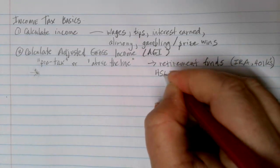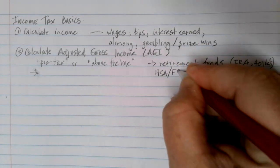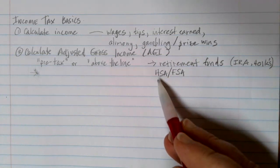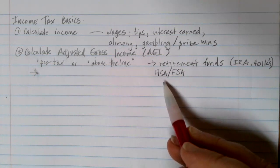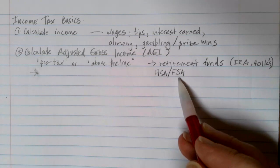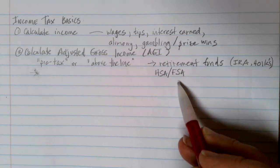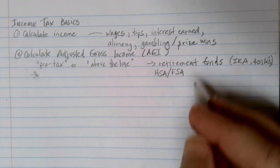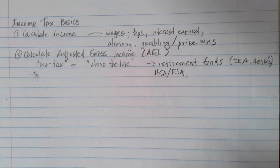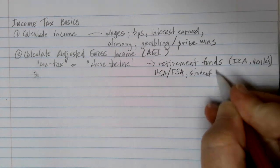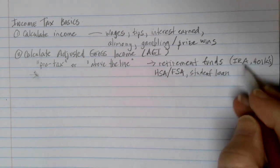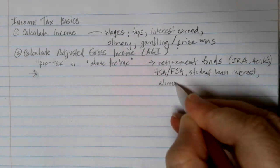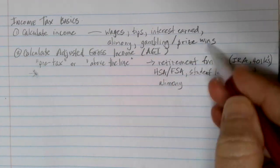Other things that count as pre-tax: you'll sometimes see HSA or FSA deductions. HSA stands for health savings account, where you're basically setting some money aside pre-tax to apply towards future medical expenses. A flex spending account gives you ways to reimburse money spent on certain qualifying health expenses as well as child and dependent care. Student loan interest also falls into this category, and alimony that's being paid gets subtracted here as well, so it doesn't get double taxed.